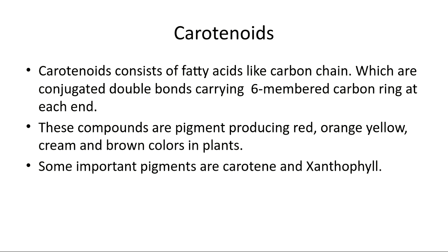The second sub-part is carotenoids. Carotenoids consist of fatty acid-like carbon chains which are conjugated double bonds carrying six-membered carbon rings. These carbon compounds are pigments that produce red, orange, yellow, cream, and brown colors in plants. Important pigments include carotene and xanthophyll, which are the most important components in plants.